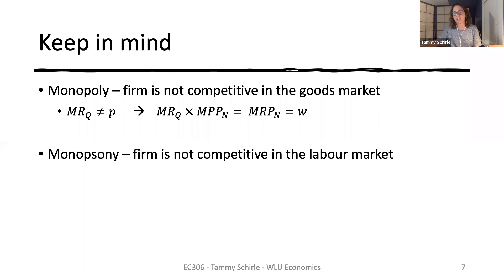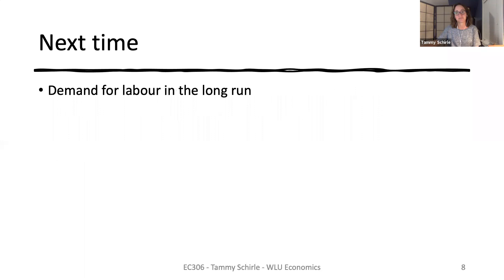We also want to consider the case of the monopsony. This is the case where firms are not competitive and can influence what wages are being offered in the labour market. We'll take this up in Chapter 7 when we return to thinking about how the labour market functions when supply and demand come together.